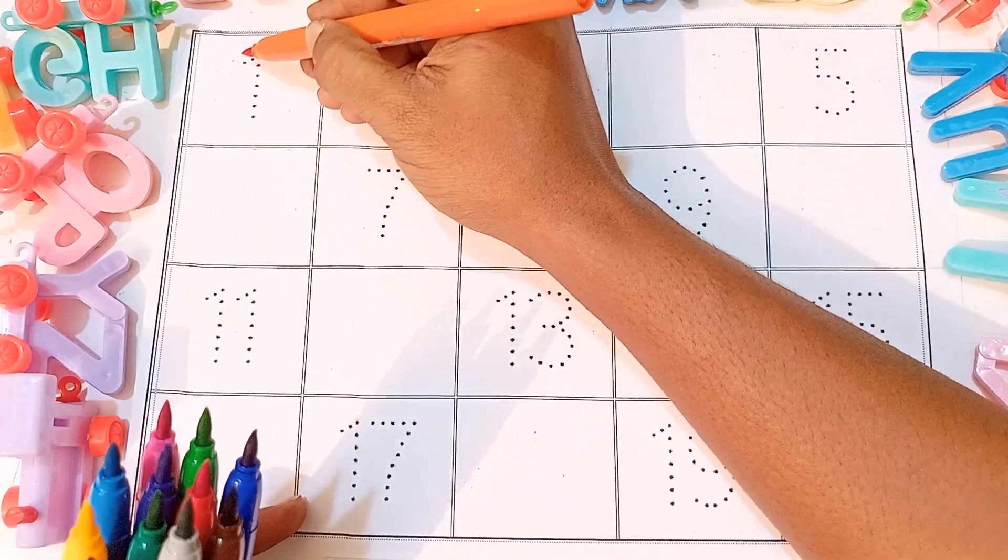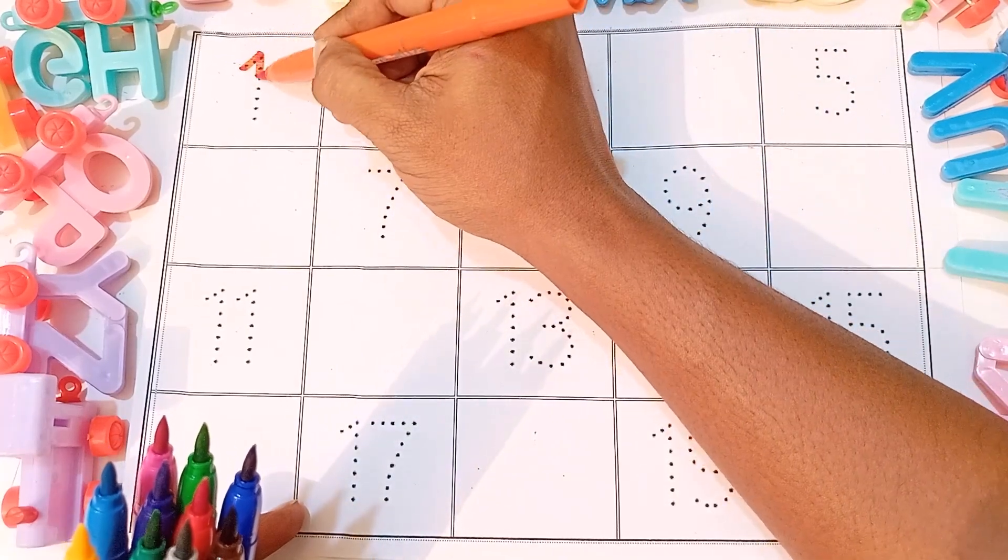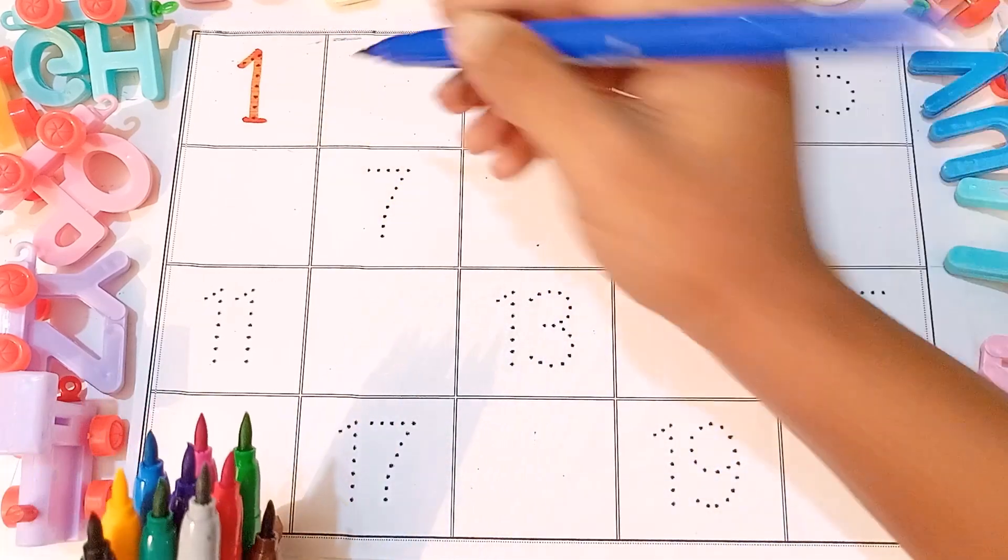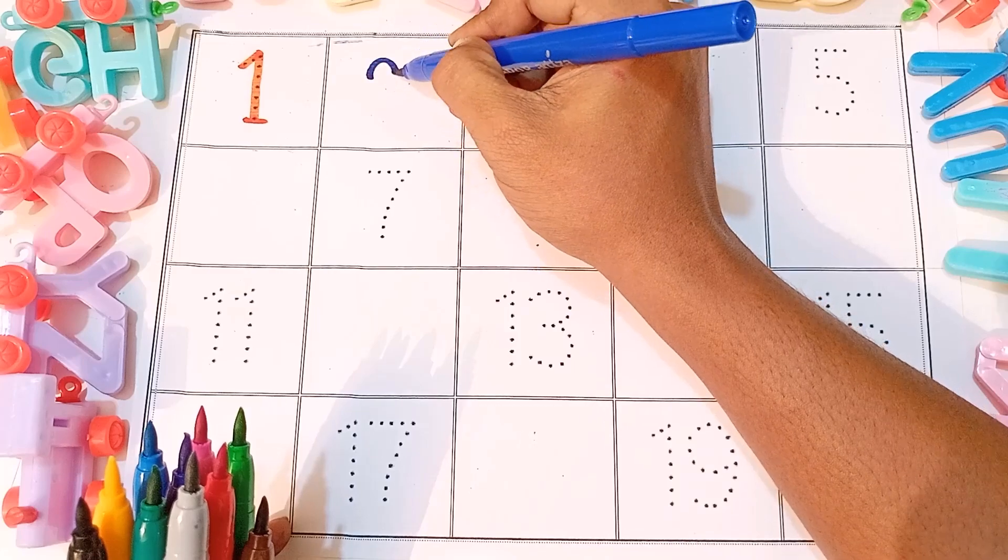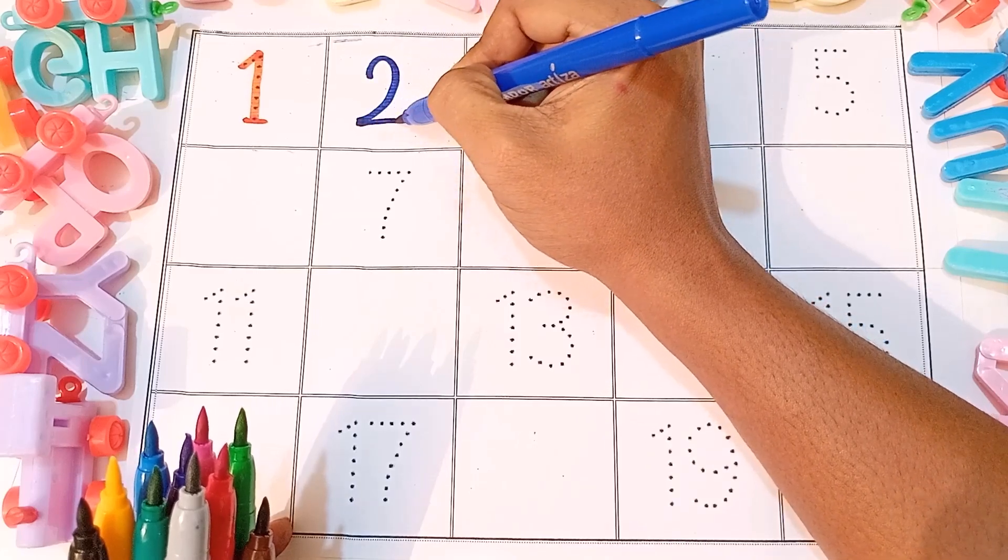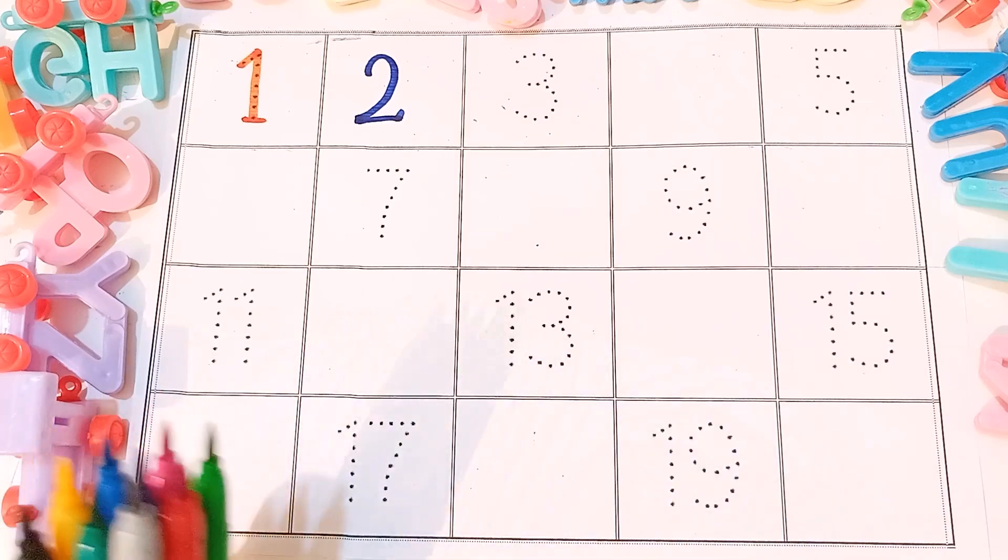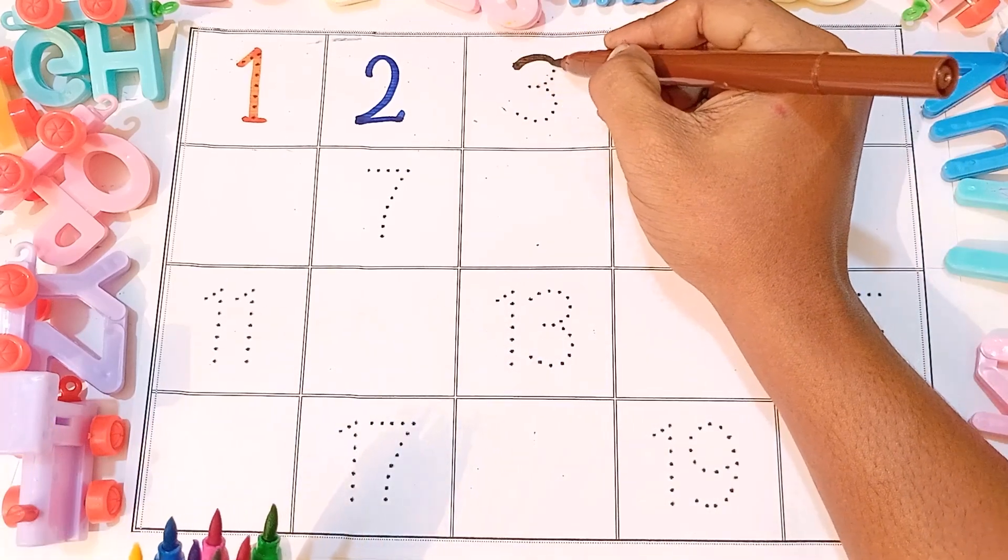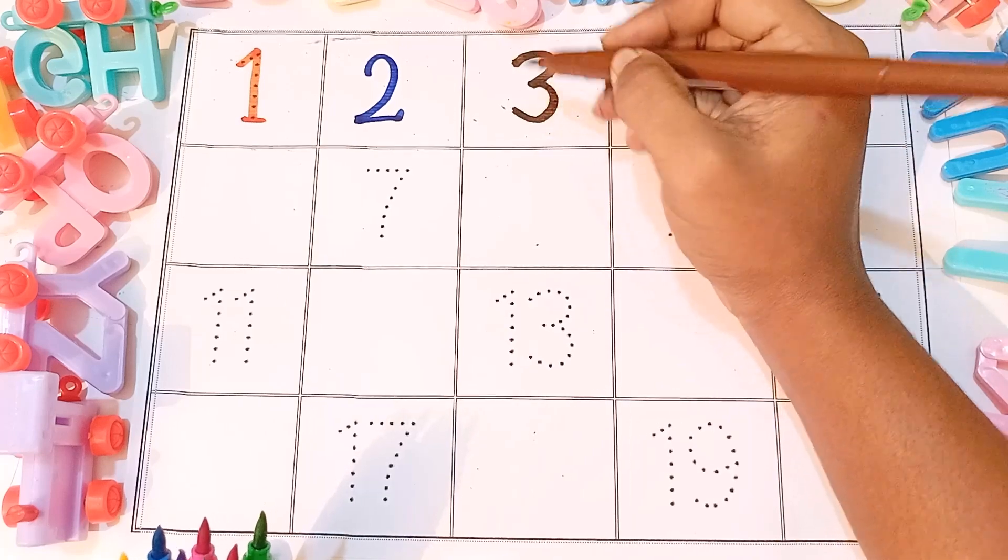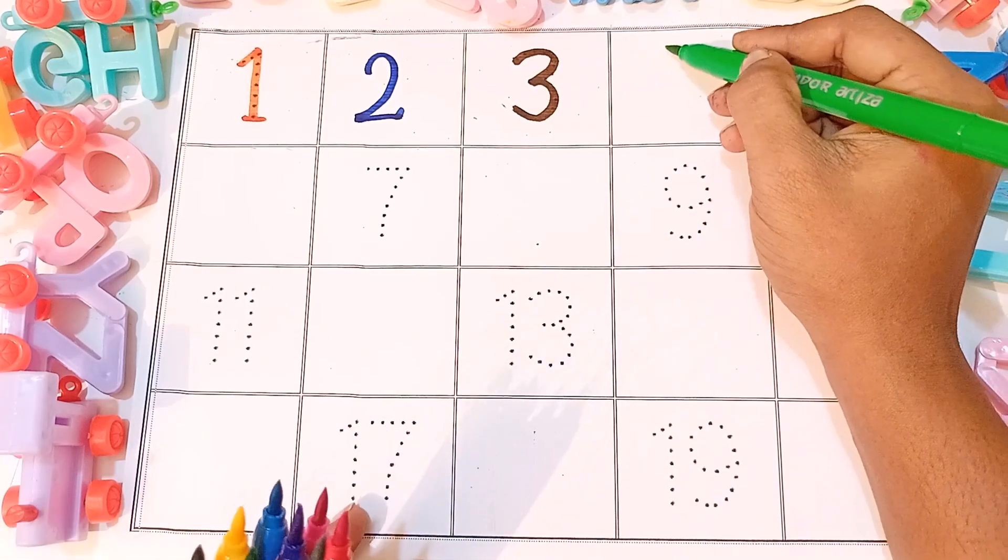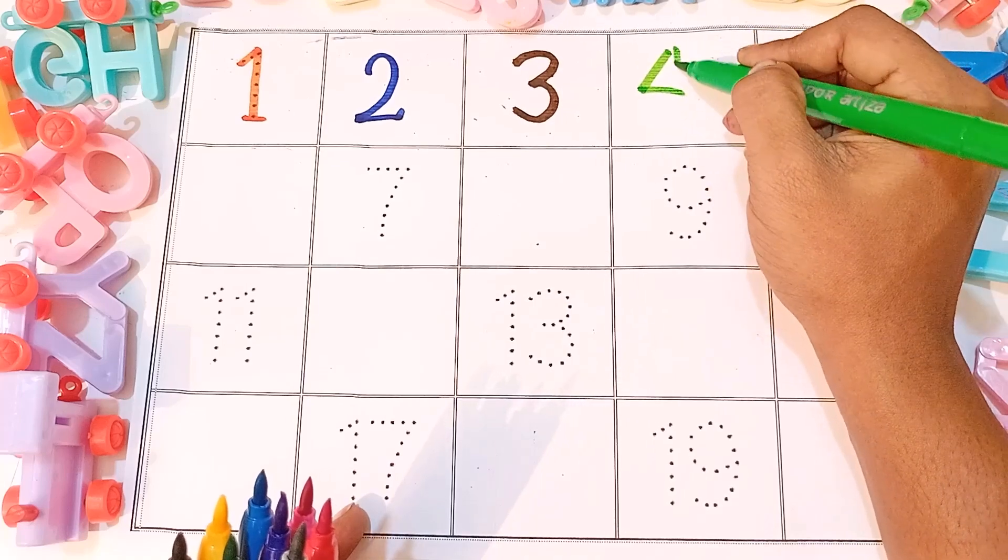One, one - orange color. Two, two - navy blue color. Three, three - brown color. Four, four - light green color.